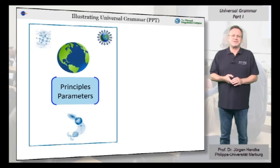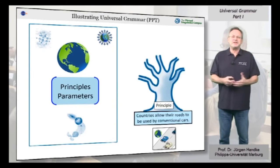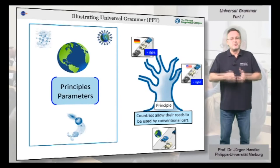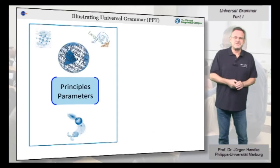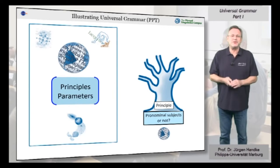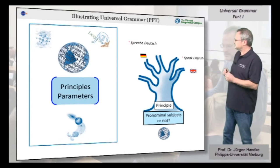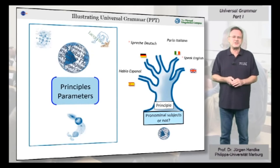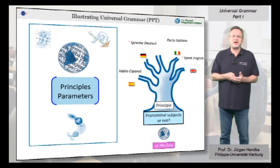To illustrate the principles and parameters approach, consider a non-linguistic example: a principle found in our world is that all countries have roads that can be driven on. The question is on which side? Here we have a parameter associated with each country — plus right for right-hand traffic and minus right for left-hand traffic. Linguistically, standard declarative sentences normally have an overt subject, even if the subject is a pronoun. This is true for English and German, where sentences without the pronominal subject are ungrammatical. Languages such as Italian or Spanish, by contrast, can form fully grammatical sentences without a separate subject. This parameter has become known as the pro-drop parameter.